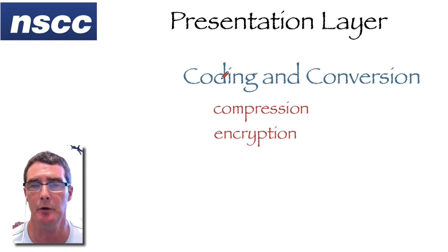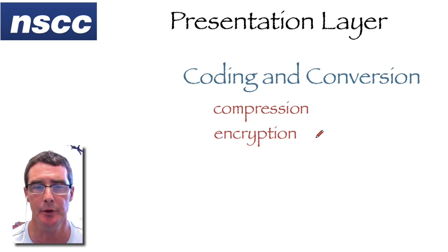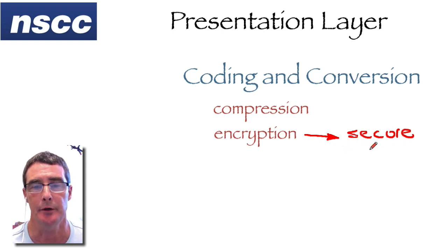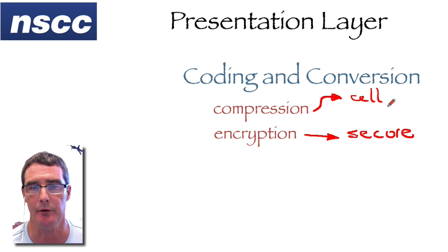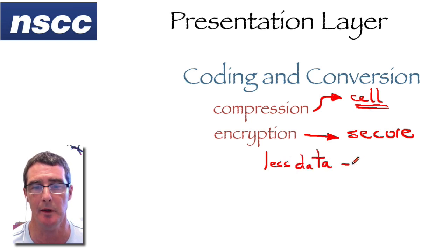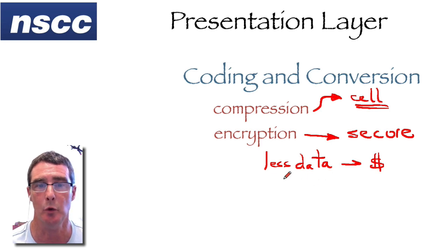The presentation layer is responsible for any encoding or decoding that needs to be done on data sent over the network. In particular, two things it's responsible for are encryption and compression. Encryption makes data more secure so it can't be read or intercepted by hackers. Compression is particularly important over cell networks — if I can compress data, I'm actually sending less data, which may reduce costs and save bandwidth. A cell channel can send more data from more customers when it's compressed.